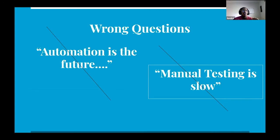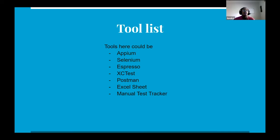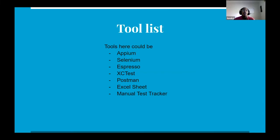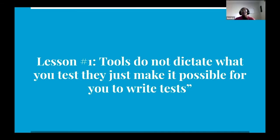These topics don't answer the original questions: how do you prove the value of testing, and how do you determine what to test? There are many tools available — Appium, Selenium, Espresso, XCTest, Postman for API testing, Excel sheets for test cases. By "tool" I mean anything that allows you to write a test. And that leads me to my first lesson: tools do not dictate what you test. They just make it possible for you to write tests.